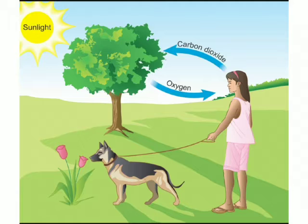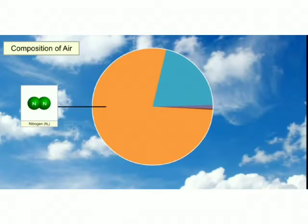We need oxygen to breathe. Plants need carbon dioxide to make food. Nitrogen is the most common gas in the air around us. It makes up almost 78% of the air.